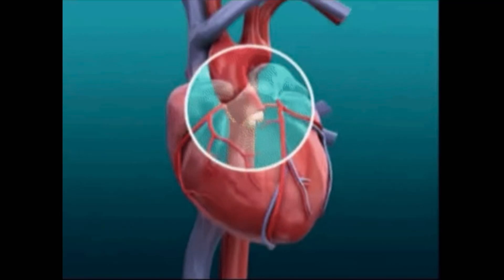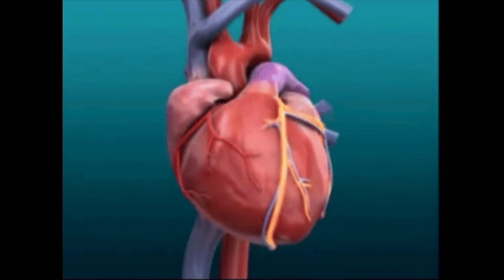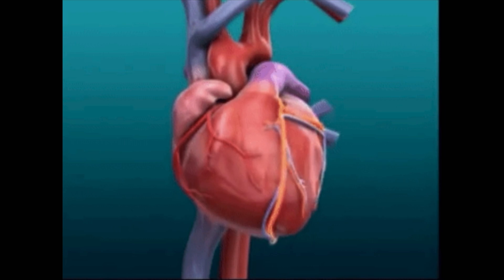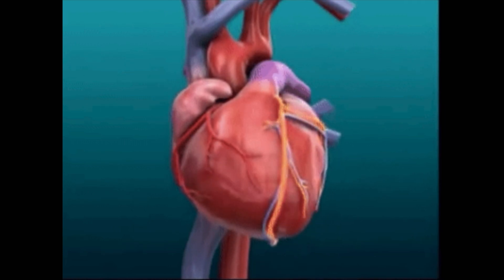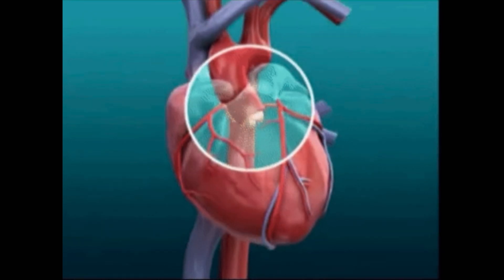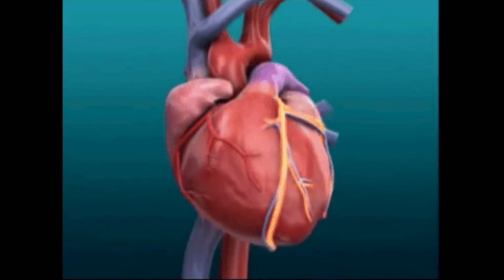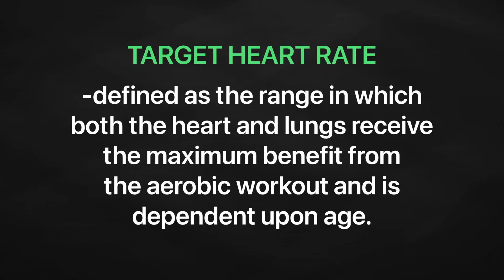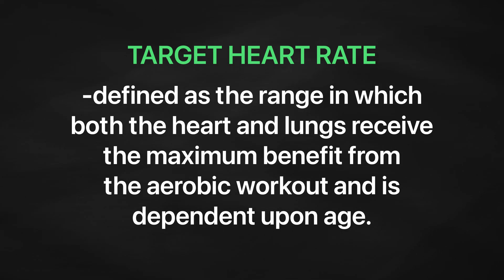It is also important to note that the coronary circulation nourishes the heart during diastole. So as heart rate increases, the ability of the coronary circulation to nourish the myocardium decreases. In that sense, the target heart rate is loosely defined as the range in which both the heart and lungs receive the maximum benefits from the aerobic workout, and is dependent upon age.